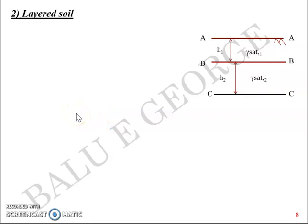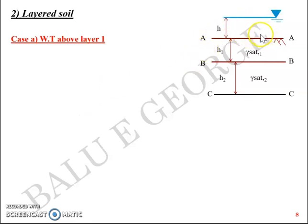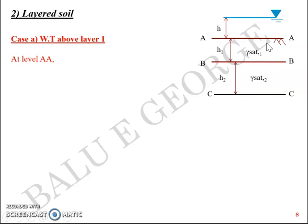Let's take Case A where the water table is above layer 1, at a height of h above level A. At level AA, what is the total stress? When you talk about total stress you need to think about the weight above it. So the total weight at level AA is the weight of the water. Area gets cancelled out and what remains is gamma_w into h — that is the total stress at level AA.